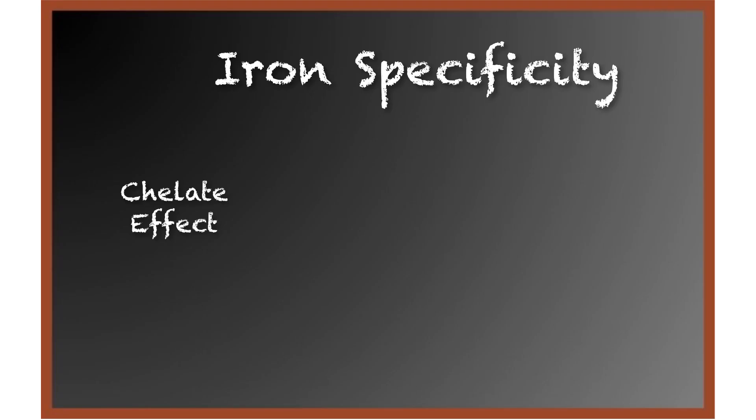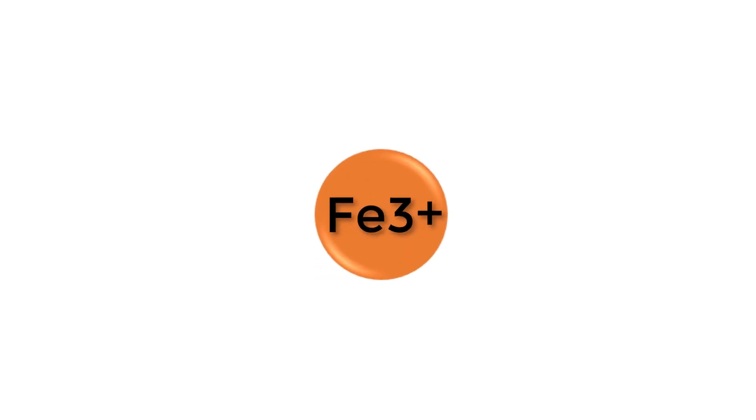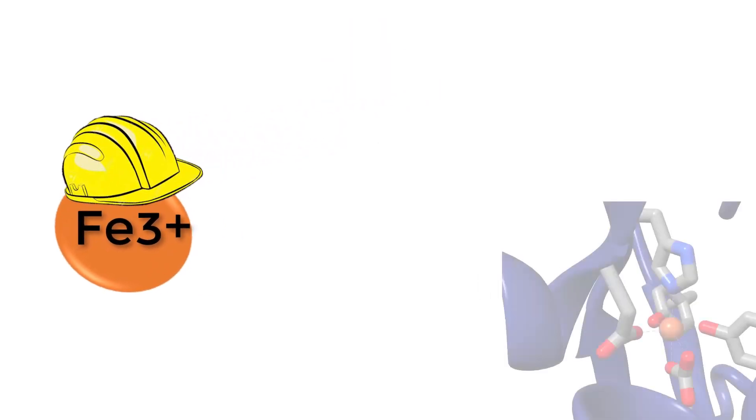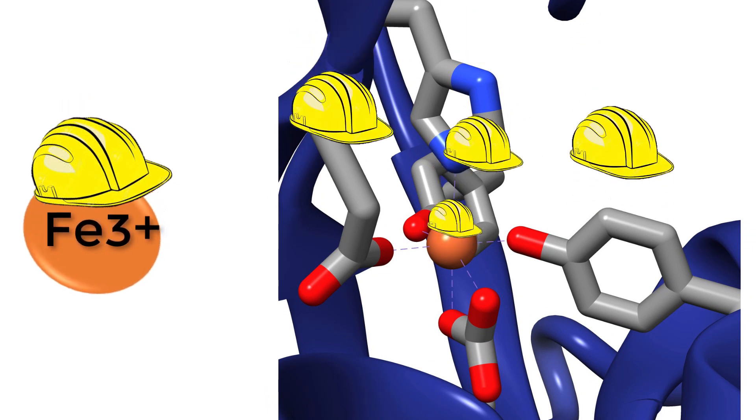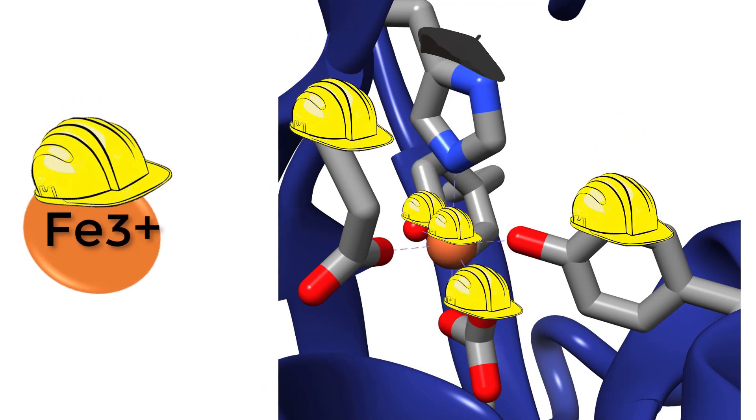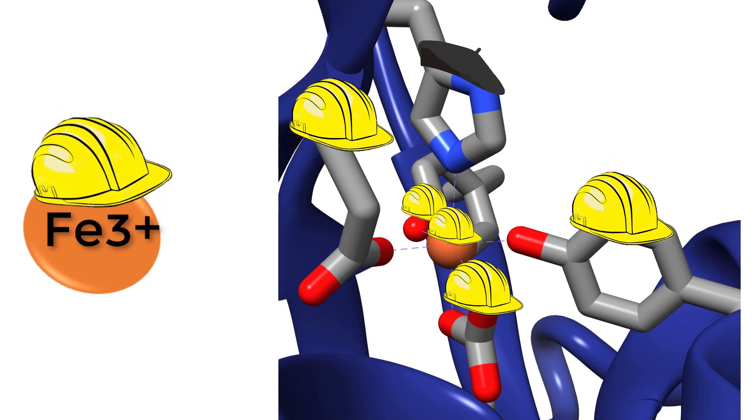Another important contributor to iron selectivity and stability is hard soft acid base theory. This follows the idea that like binds with like. Iron 3 is a hard acid and all of the binding atoms in the amino acids bound to iron 3 are hard bases with the exception of histidine. This makes the resulting complex very stable.